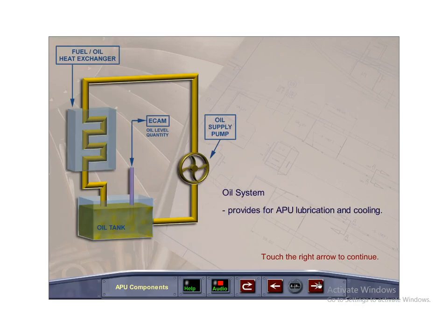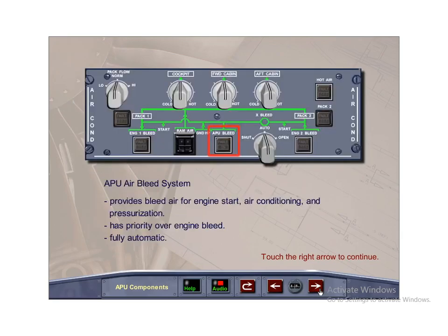The APU uses an integral independent lubrication system for lubrication and cooling. The APU air bleed system provides bleed air from the APU for engine start, air conditioning, and pressurization. It has priority over engine bleed and is fully automatic.